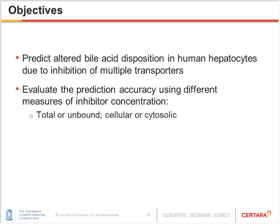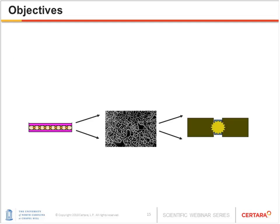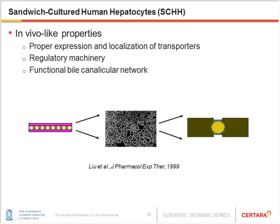The primary objective is to predict altered bile acid disposition in human hepatocytes due to inhibition of multiple transporters. The secondary objective is to evaluate the prediction accuracy using different measures of inhibitor concentrations, including total or unbound concentration in the cell or cytosol. In this study, we used sandwich-cultured human hepatocytes (SCHH) as the experimental system because it is a physiologically relevant whole-cell system with many in vivo-like properties, including proper expression and localization of multiple transporters.